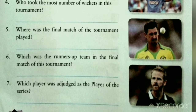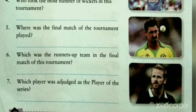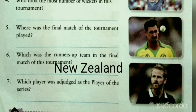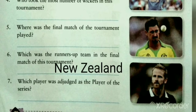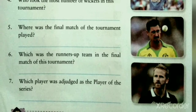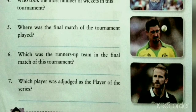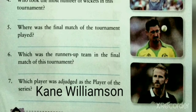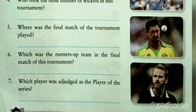Question 6: Which was the runners-up team in the final match of this tournament? The runner-up team is New Zealand. Question 7: Which player was adjudged as the player of the series? The answer is Kane Williamson.